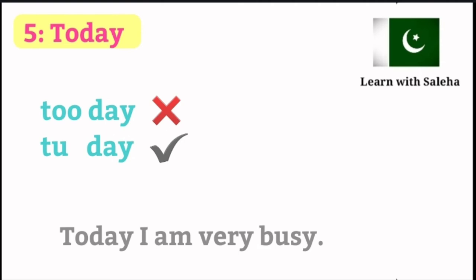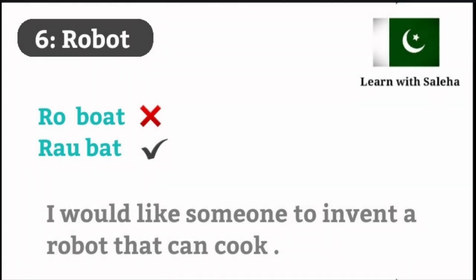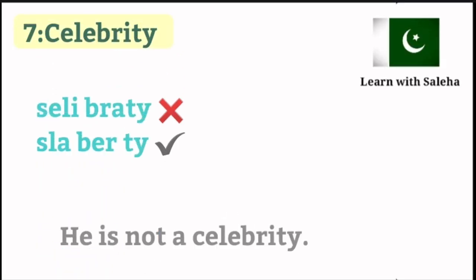Number 6: Robot. It's not robot, it's robot. Example sentence: I would like someone to invent a robot that can cook. Number 7: Celebrity. It's not celebrity, it's celebrity. Example sentence: He is not a celebrity. Who is your favorite celebrity?